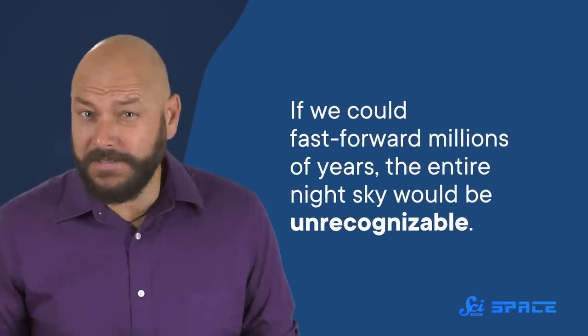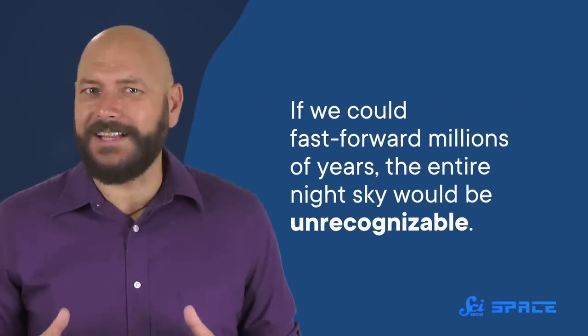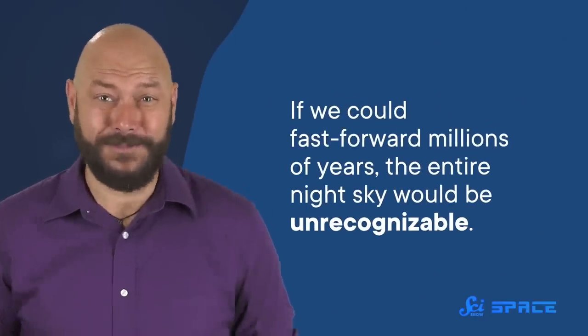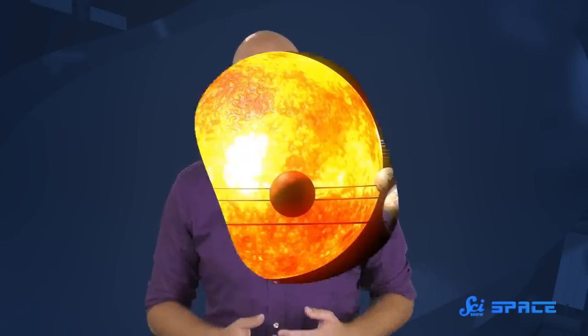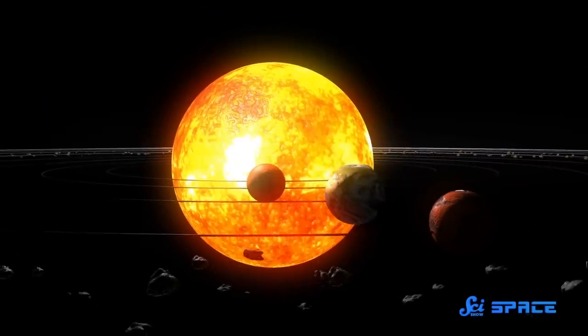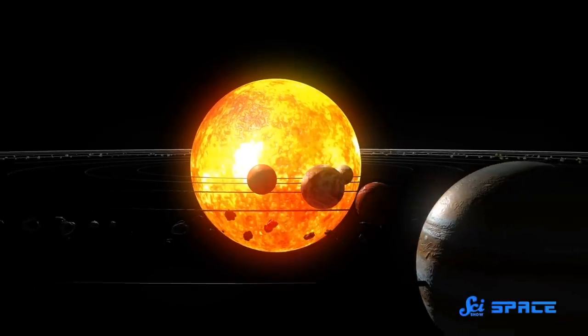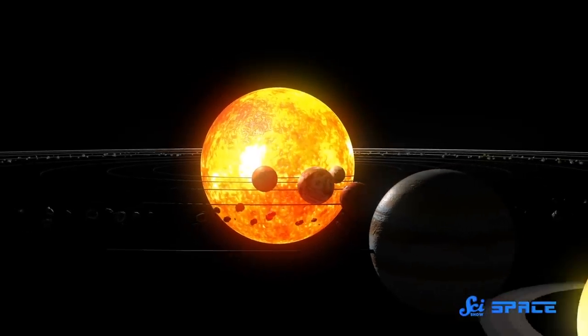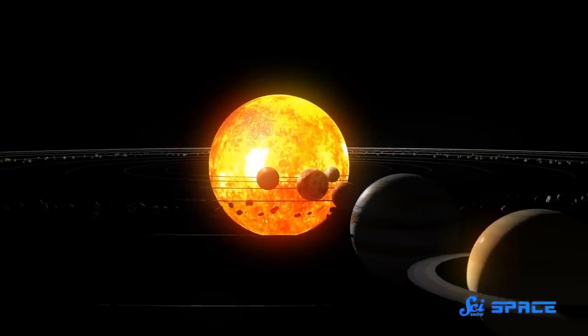And if we could fast-forward millions of years, the entire night sky would be unrecognizable. That's because, as Earth wobbles its way around the Sun, the solar system is whipping around the galaxy, making a full orbit once every 225 million years. And just like the planets in our solar system all take different times to go around our Sun, so too do all the stars in the Milky Way. From the other side of the galaxy, Earth would be beneath a brand-new sky.